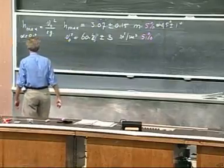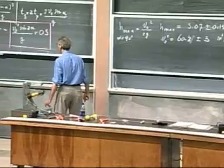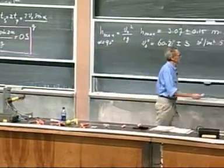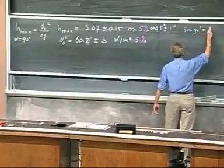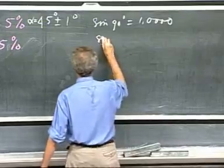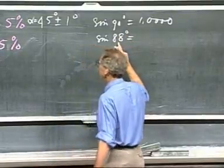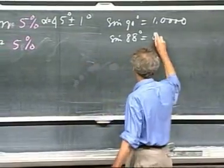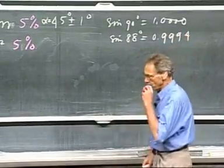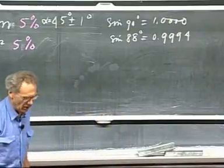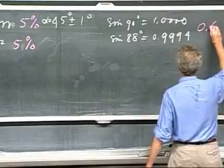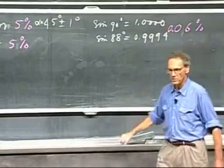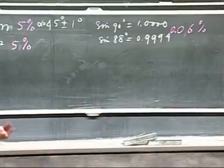So now comes the question: what happens with the sine of 2 alpha? Because we're going to measure OS. The sine of 90 degrees is 1.0000. But what would be the sine of 88 degrees? That is the value I cannot exclude if I'm off by one degree. That value is 0.9994 — so close to 1 that it is only off by 0.06%. That is so low compared to 5% — forget the error in alpha.